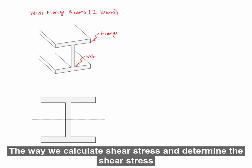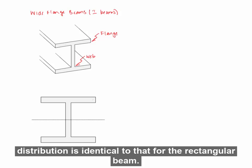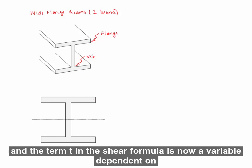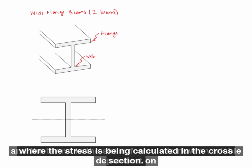The way we calculate shear stress and determine the shear stress distribution is identical to that for the rectangular beam. The only difference is that the calculation for Q is a bit more complex, and the term T in the shear formula is now a variable dependent on where the stress is being calculated in the cross section.